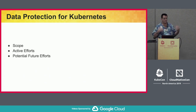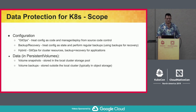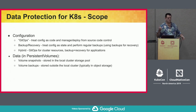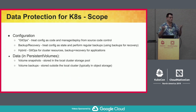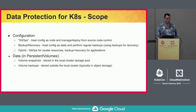Now mapping this to Kubernetes, there are a couple of things to cover: what's in scope, current active efforts, and potential future efforts in the Kubernetes space. If you think of the state we're trying to capture in Kubernetes, it breaks down into two categories: the configuration and resources in etcd that describe the overall system, and the data in persistent volumes.